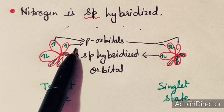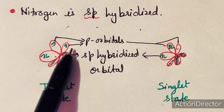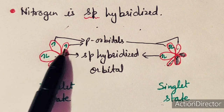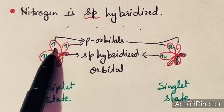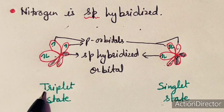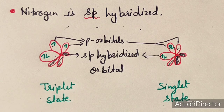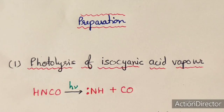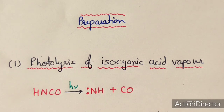When two unpaired electrons are present, multiplicity becomes 3, so it is a triplet state. Now we will discuss about the preparation methods of imine free radical.